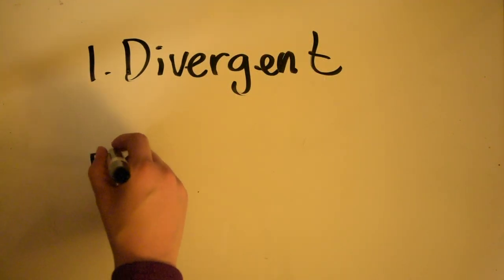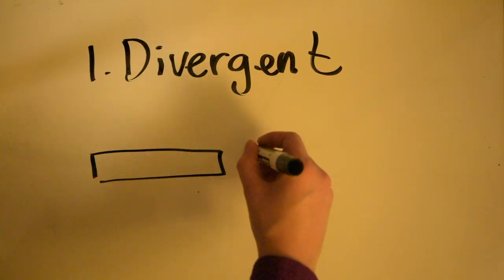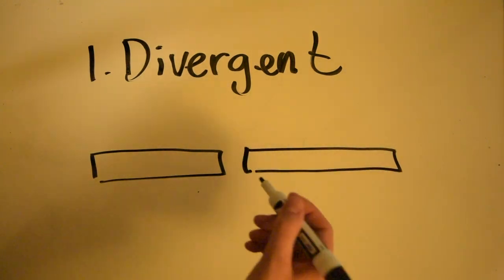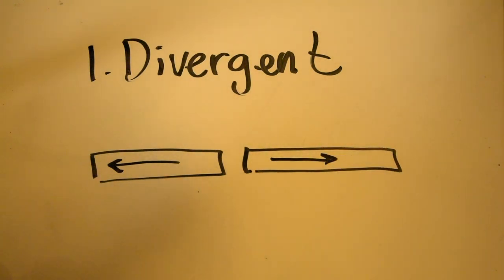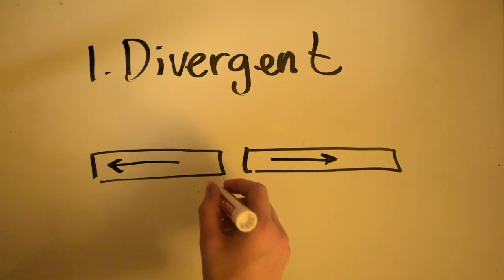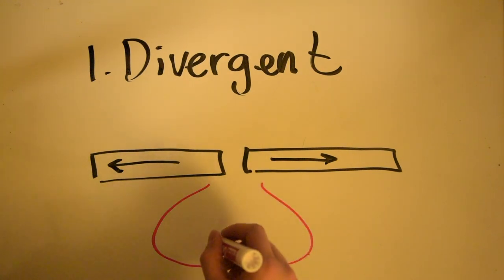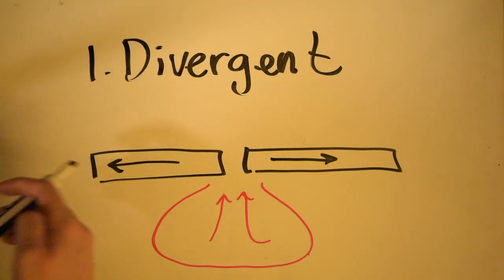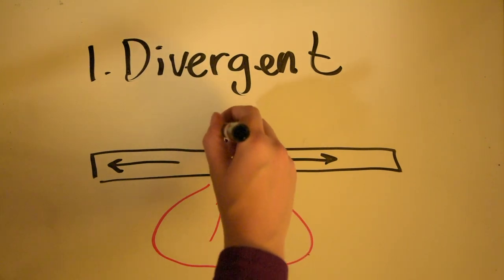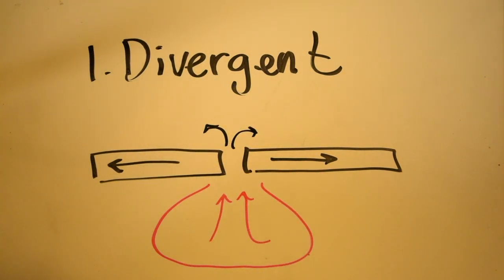This is when two pieces of crust or lithosphere are being separated, so they're going to go in opposite directions. And when this happens, we have this magma here that upwells onto the surface and creates what is known as a mid-ocean ridge.